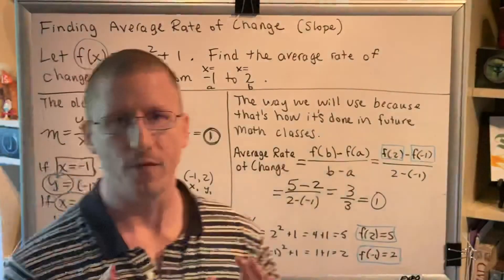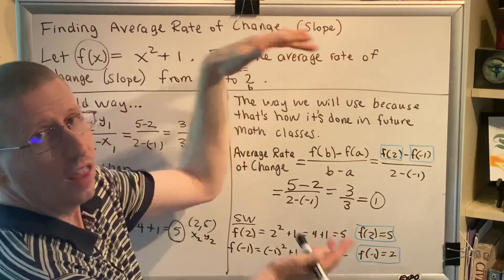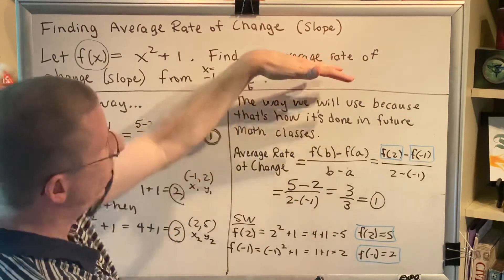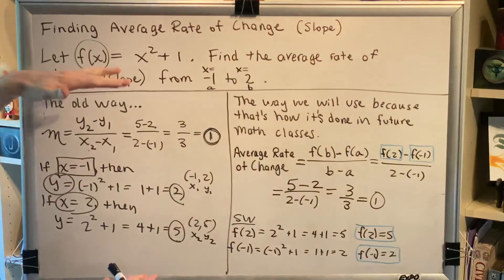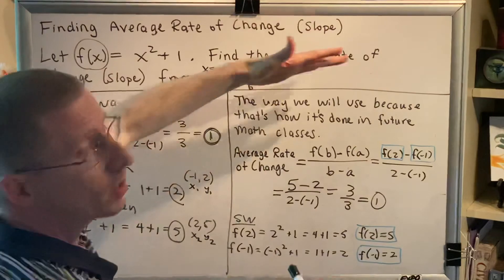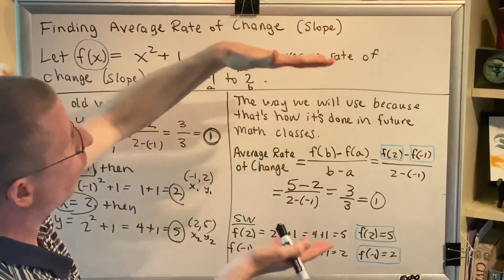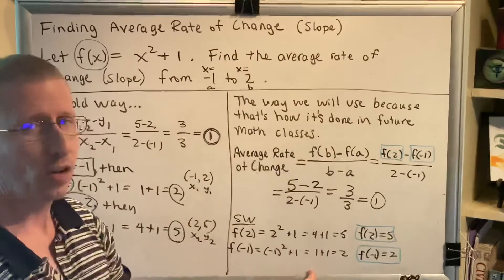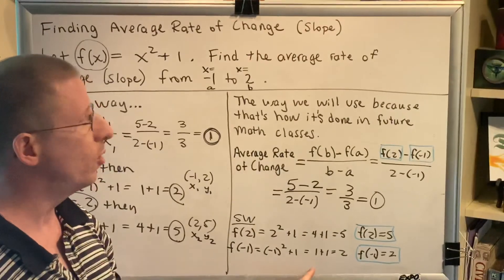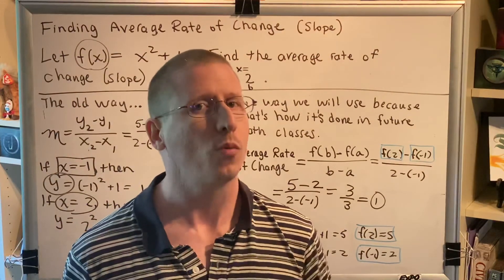Now, I'm going to emphasize just one more time, this is the way you need to write it. This is the way you need to understand it. This is how it's going to be done in future math classes. I've only given you this as a stair step to help you arrive at the level that I need you to be at for this particular topic in this particular class, because the skill that I'm trying to teach you is how to use this notation to write solutions and find an average rate of change.